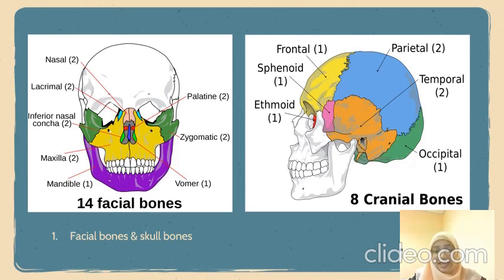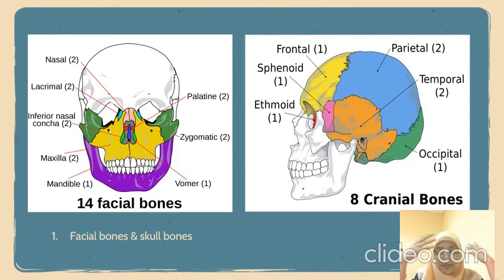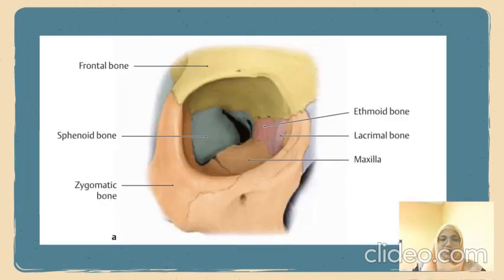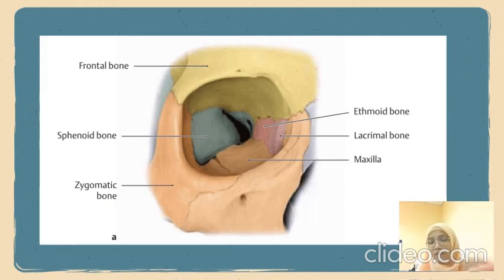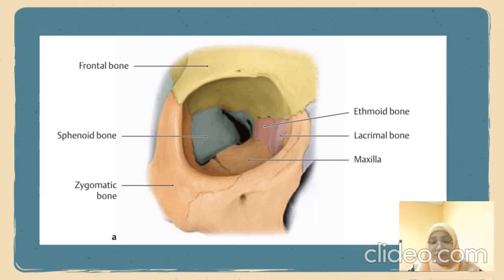Last but not least is the ethmoid bone. The ethmoid bone is an irregular bone located in front of the sphenoid bone, and it makes up your nasal cavity. The picture shown is a view from the eye socket, where we can see several bones such as the frontal bone, sphenoid bone, zygomatic bone, ethmoid bone, lacrimal bone, and maxilla.